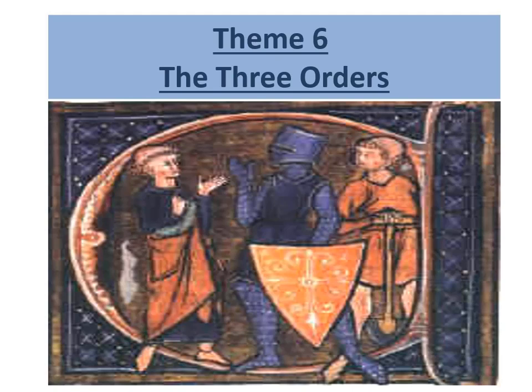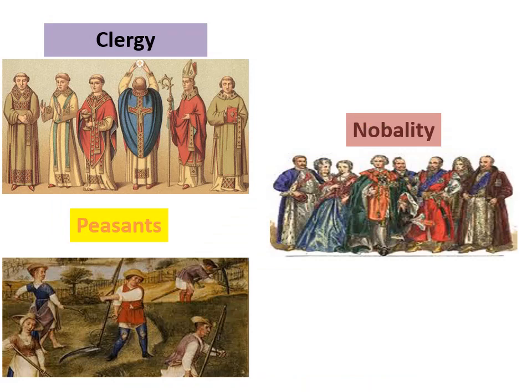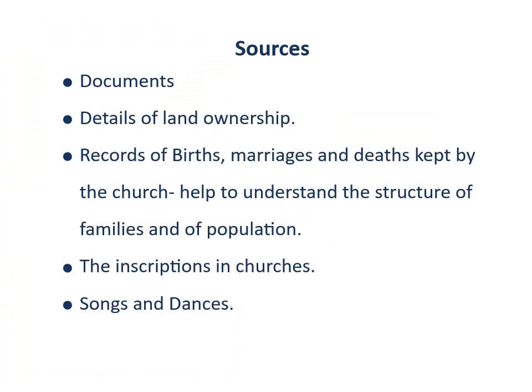The first estate was clergy, the next was nobility, and the third one was peasants. The sources through which we can understand this society and era are documents. Details of land ownership, records of births, marriages, and deaths kept by the church help to understand the structure of families and population. Inscriptions in churches and songs and dances tell about the whole system of that era.